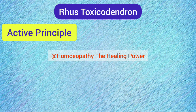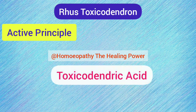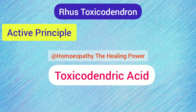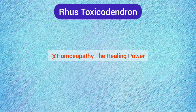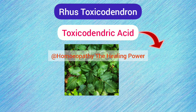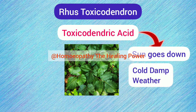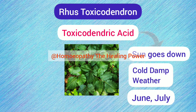The most important active principle of Rhus Tox is Toxicodendric Acid, which is a fixed oil volatile substance. This acid is given by the plant in the greatest amount when the sun goes down — that is at sunset — in damp cloudy weather, and in warm days of the months of June and July. This is the beauty of our nature, and the most important part is how homeopathy is synchronized with this nature, which we can see through the symptomatology of Rhus Tox.